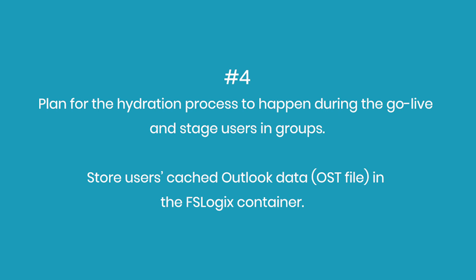Therefore, when you're onboarding a large number of users, be prepared to stage users in groups — because if they all log in at the same time for the first time and open up Outlook, all of them are going to start consuming disk resources on the server and the file server where the FSLogix container resides. Our best recommendation is to pre-stage users in small groups or have them log in in advance to hydrate that OST file, thereby reducing the disk IO load during the first login when the users go live.